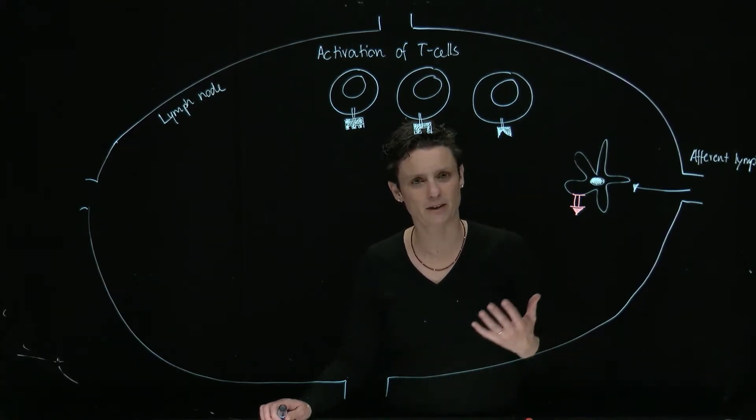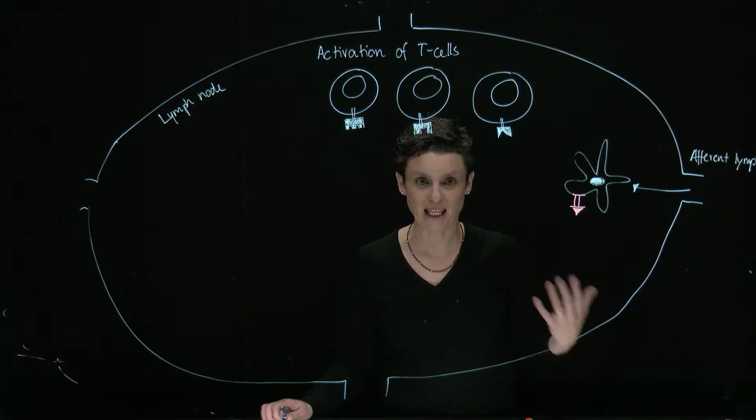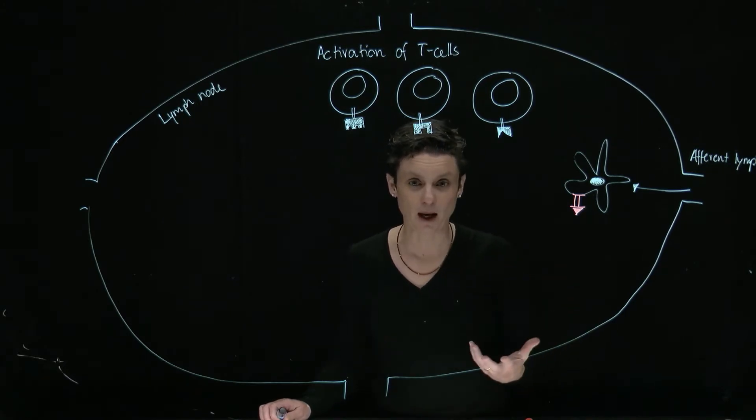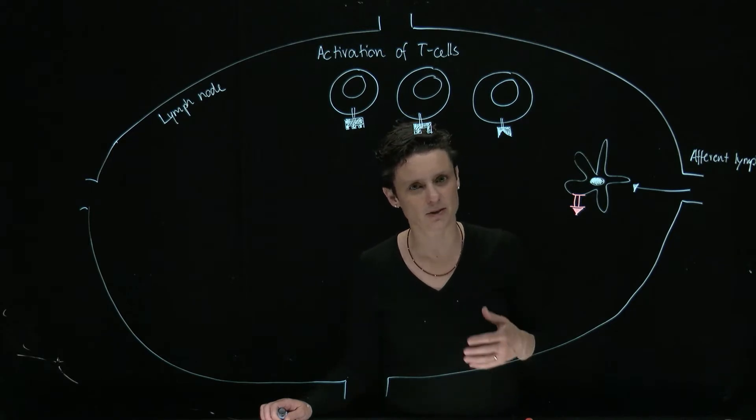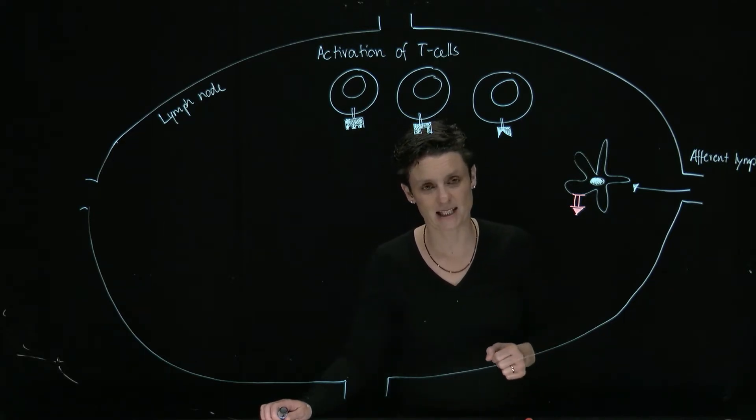So we started with our first part, the activation of the innate immune system and said, well, the bacteria is going to be picked up by guards stationed throughout our tissue, which is going to be the macrophage and the dendritic cell.